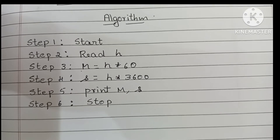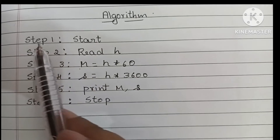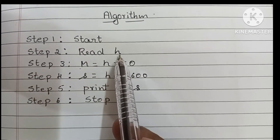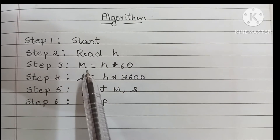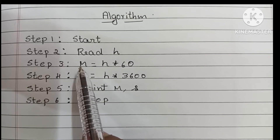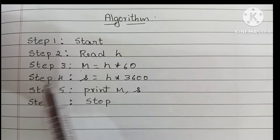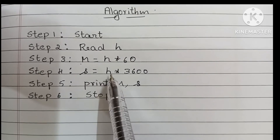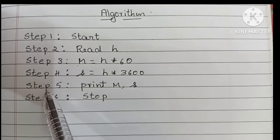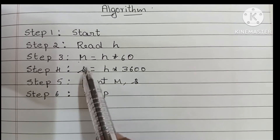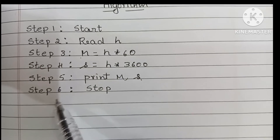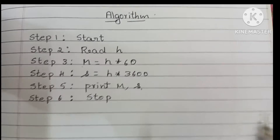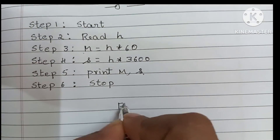In step 1 we write the start statement. In step 2 we read h, that is hours. Step 3 we convert hours to minutes format: m is equal to h into 60. In step 4 we find s, that is seconds: s is equal to h into 3600. In step 5 we print minutes and seconds, that is m and s. In step 6 we stop the algorithm using the stop statement.